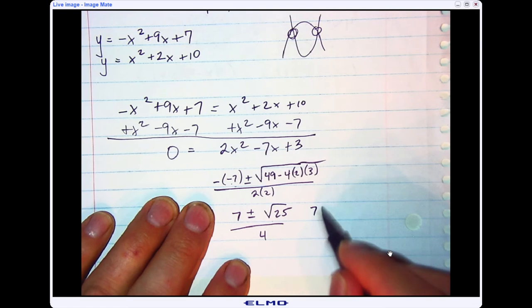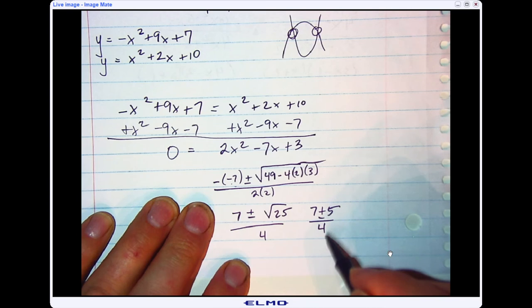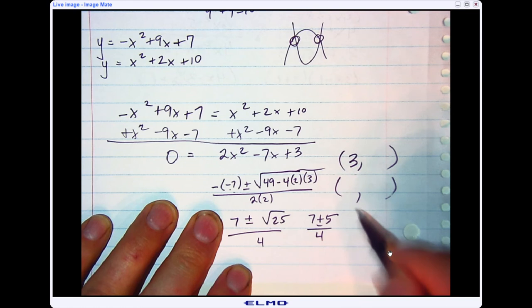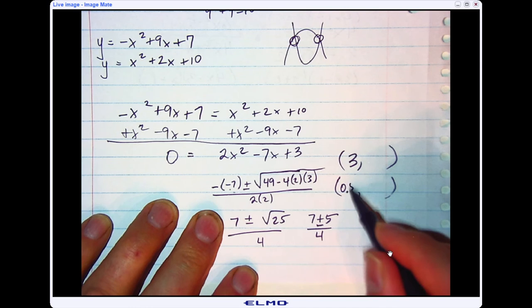Now the square root of 25 is 5. So now I have 7 plus 5 is 12 divided by 4 is 3. So that would be one of my x values. And then if I do 7 minus 5 is 2 divided by 4 is 0.5. So I have my two x values.